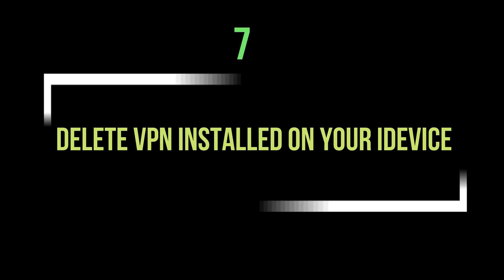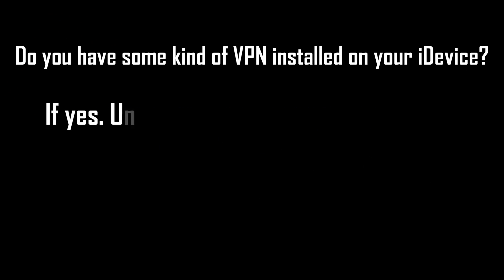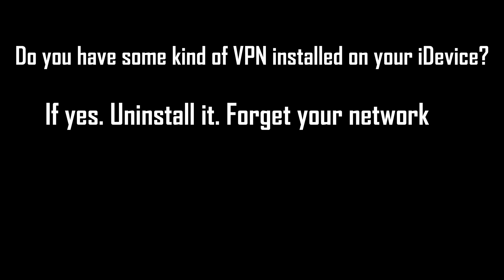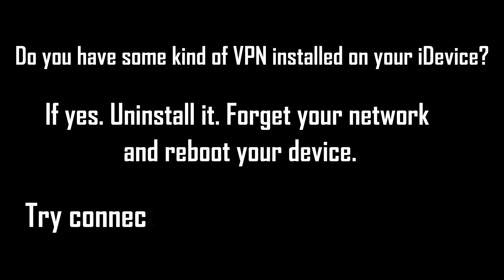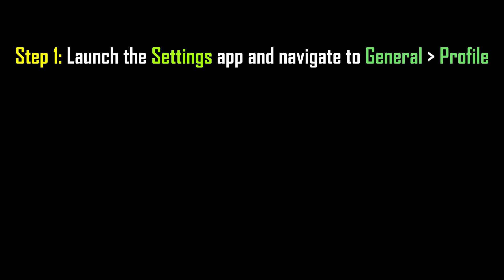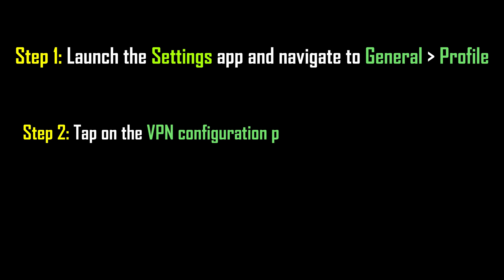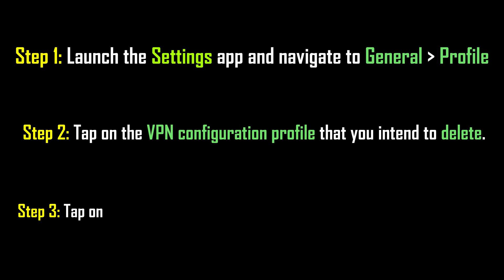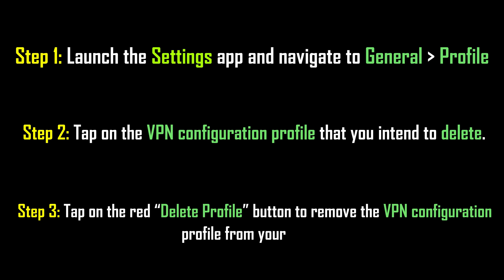Number 7: Delete the VPN profile installed on your iPhone. Follow the on-screen instructions to check whether a VPN profile is installed or not on your device. If you have installed a VPN profile, you will have to delete the profile and then restart your device, because the VPN profile can restrict Wi-Fi connections sometimes. Due to this your device won't connect to a Wi-Fi network, so I suggest you delete it and then check.